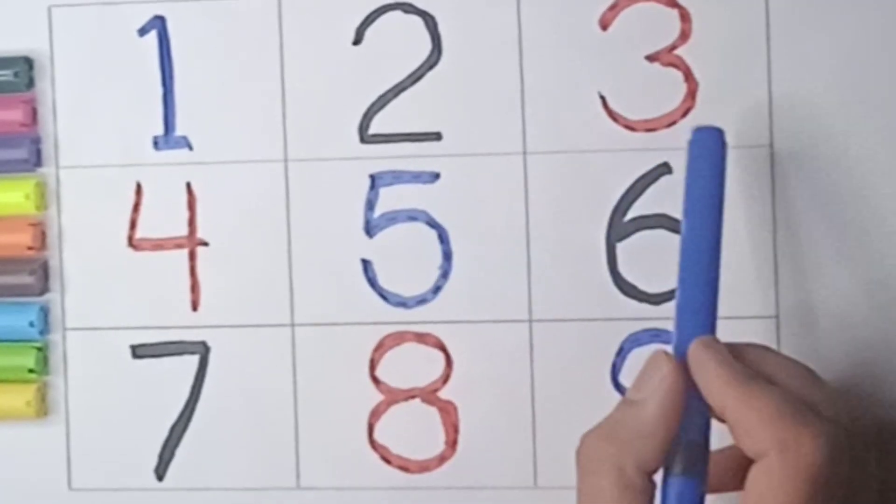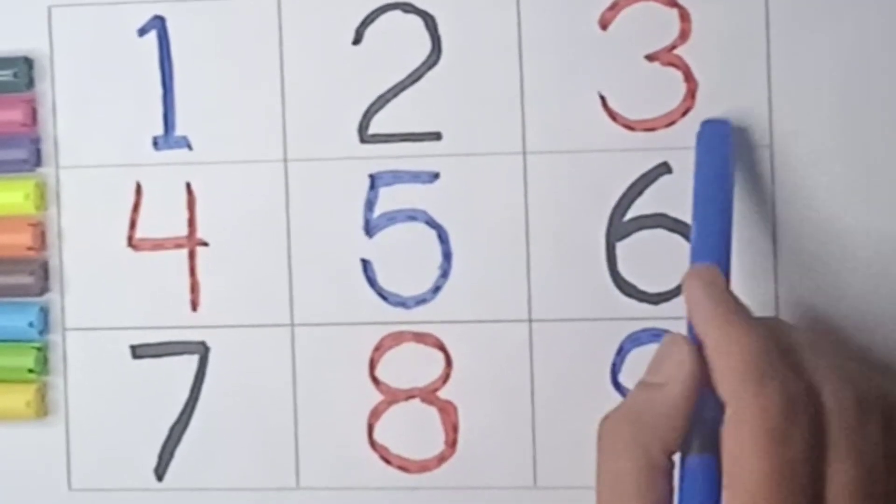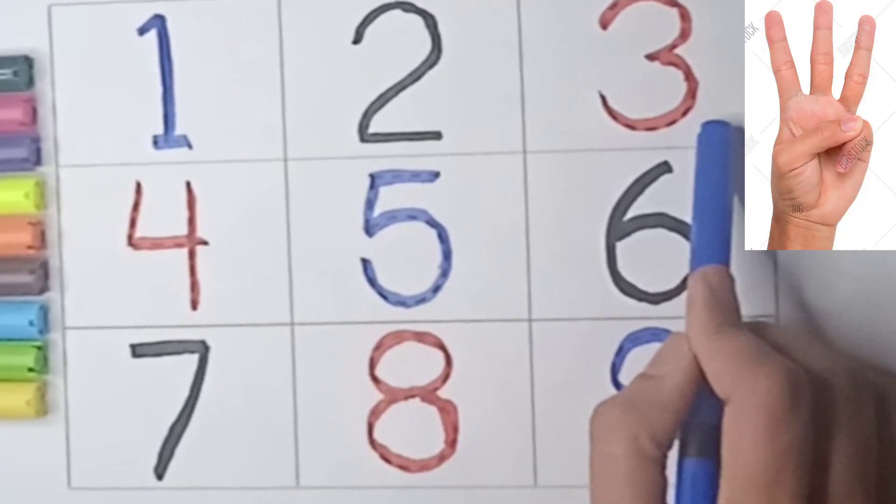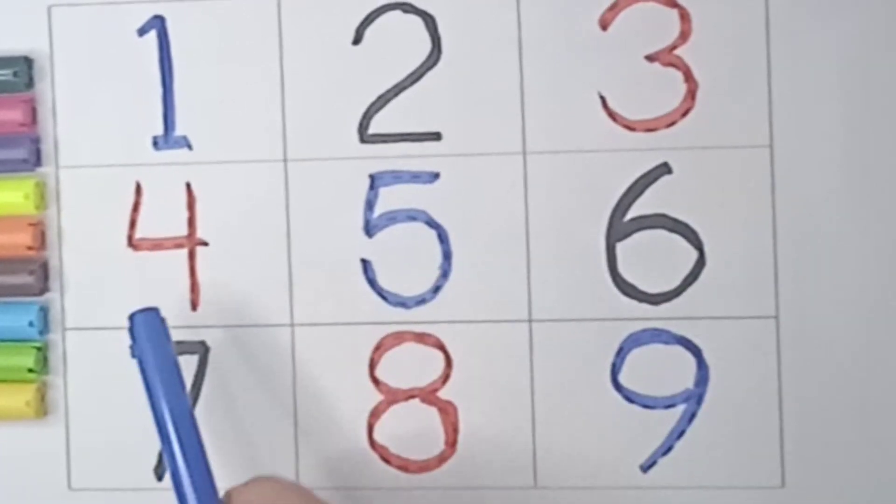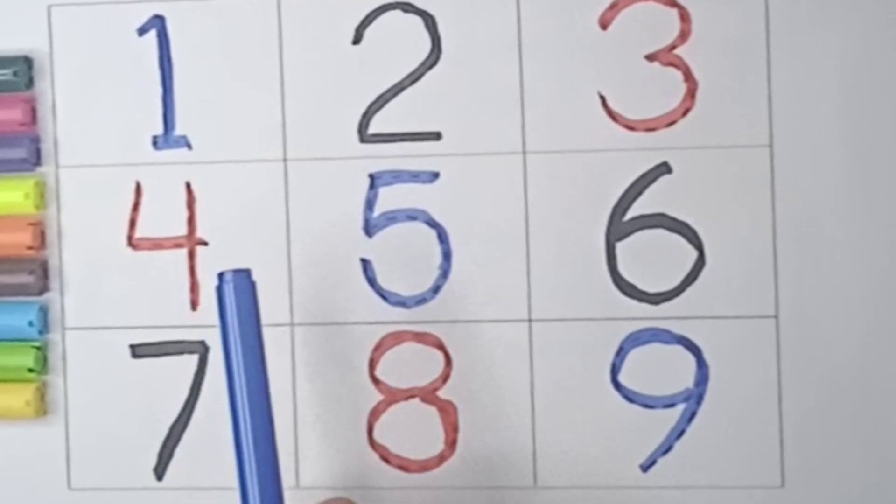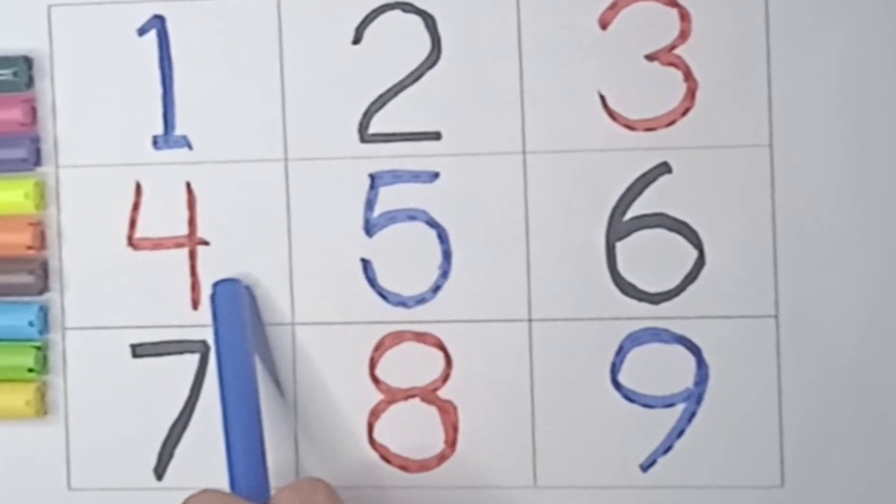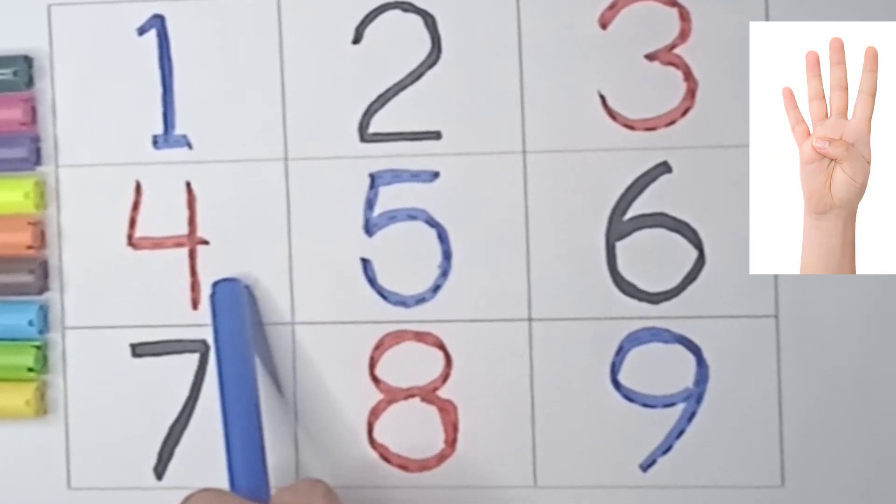Number 3. Say 3. Count your three fingers. 1, 2, 3. Three fingers. Number 4. Say 4. Count your four fingers. 1, 2, 3, 4. Four fingers.